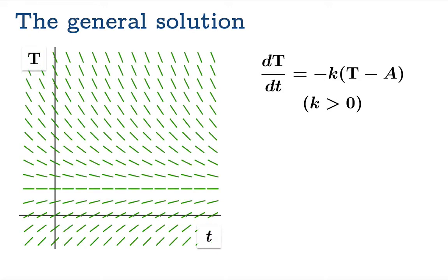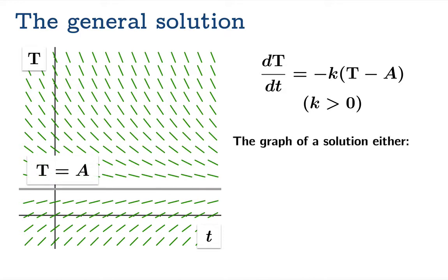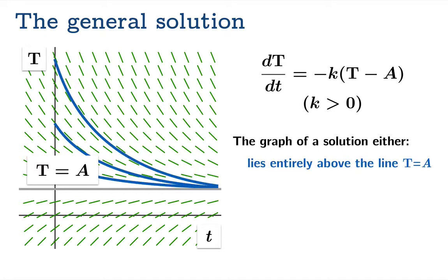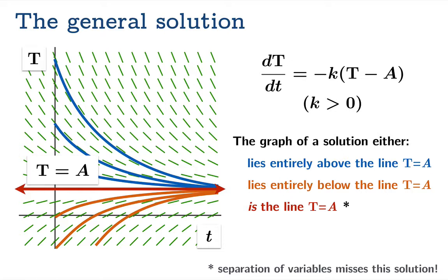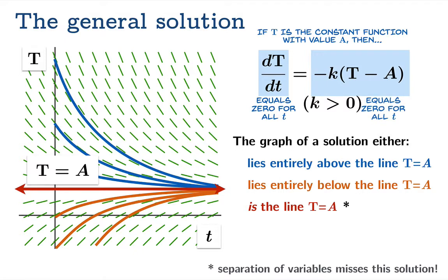Here's a slope field for our differential equation. Here's the line T equals A. We'll notice that the graph of a solution either lies entirely above the line T equals A, which we saw was one possibility on the previous slide, or lies entirely below the line T equals A, the other possibility we saw previously. And you'll notice that there is something missing. There's the possibility that the line T equals A itself is a solution to this differential equation. And this is not a solution that shows up from separation of variables. It's easy to verify this truly is a solution because if T is the constant function with value capital A, then of course on the one hand the derivative of a constant function is zero for all t, and on the other hand this algebraic expression on the right side is obviously zero for all values of t. So this is in fact a solution.